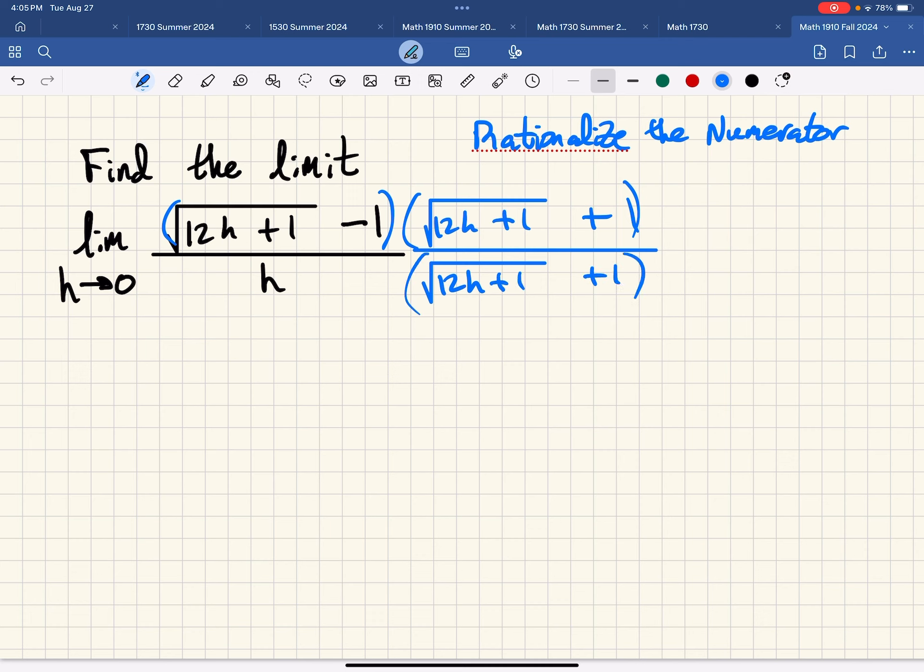So we're multiplying the top and bottom by the conjugate of this numerator. And the conjugate of that would consist of similar terms except for this sign inverting.